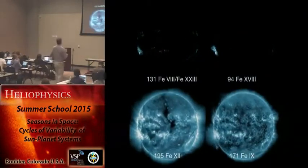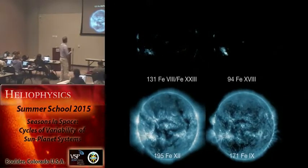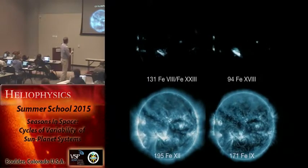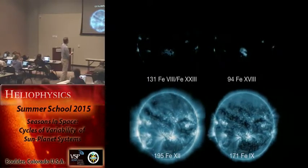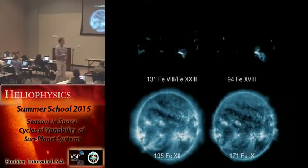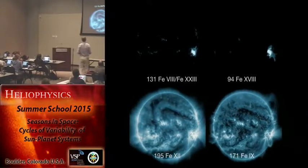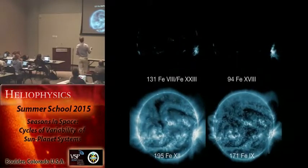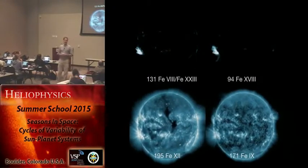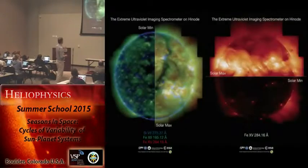Let's look at emission over a solar rotation. For very high-temperature emission that doesn't occur in the quiet sun, the contrast is enormous, meaning the rotational modulation is enormous. However, most of the corona is filled with million-degree plasma, so the rotation of even a large active region like AR 12192 doesn't dramatically impact the irradiance over a full solar rotation.